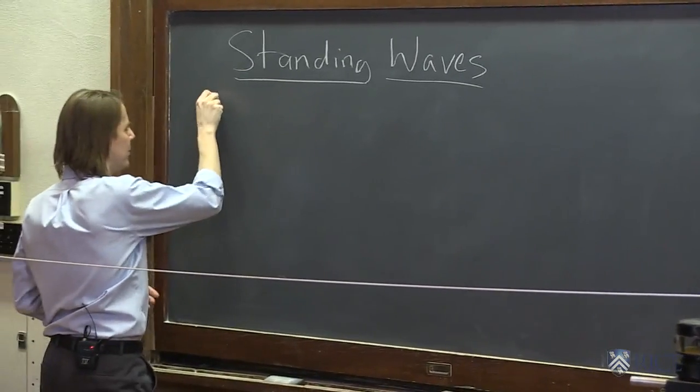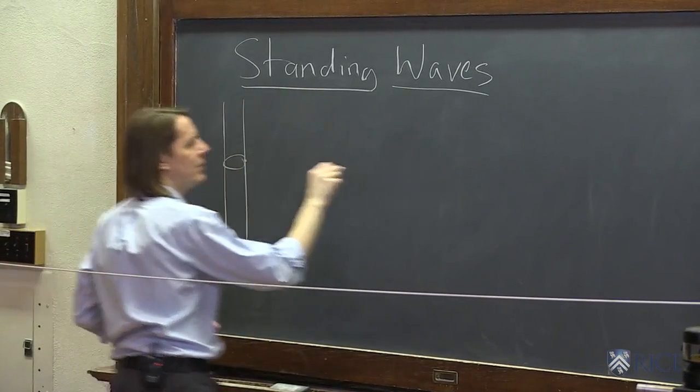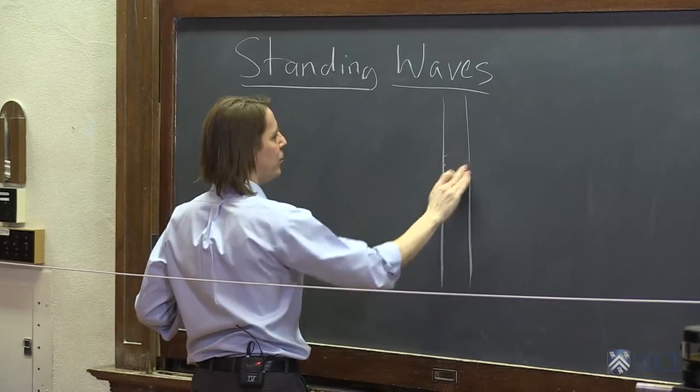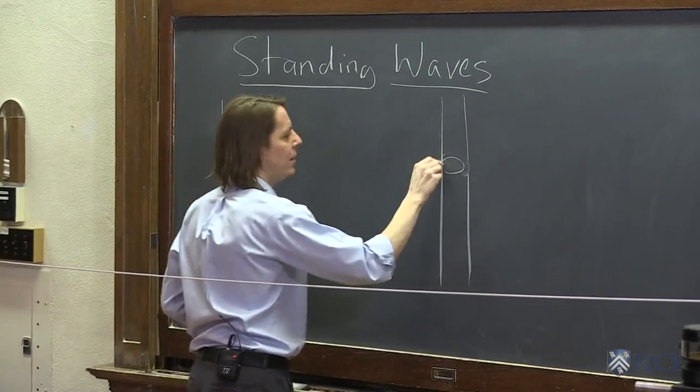So let me first draw our setup here. We've got two rods and you've got the string tied to one end and string tied to the other rod. But I'm not going to draw the string yet because we're going to draw it in a special shape. So here's the knot and here's the knot.